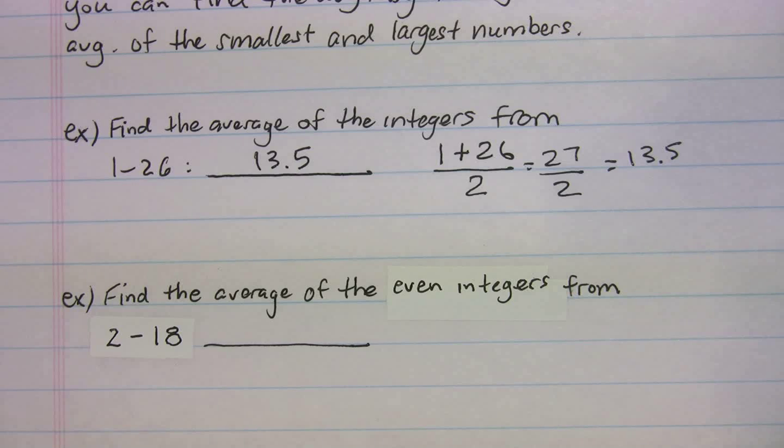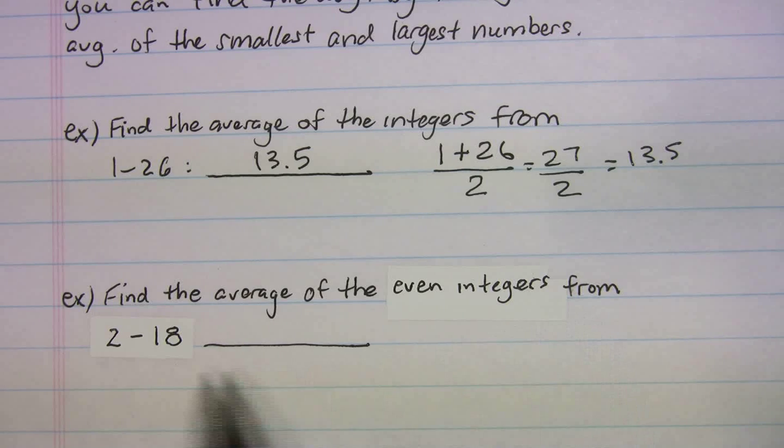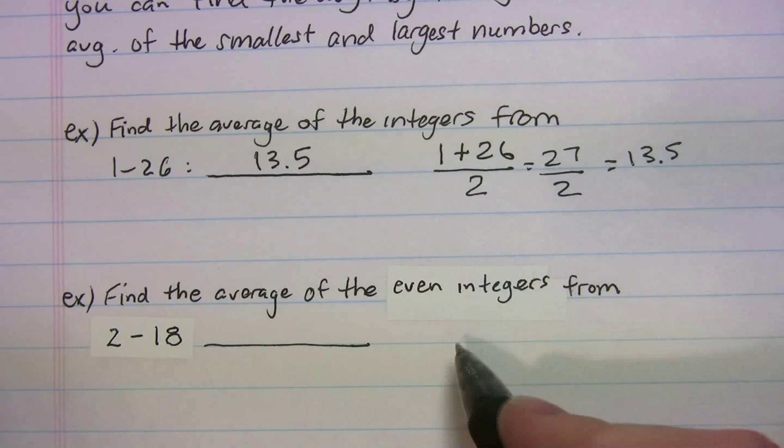You can even use that shortcut for when you're doing even numbers, if it's a set of even numbers or a set of odd numbers. The main thing, it has to be evenly spaced. So why don't you guys try this one? You can pause the video, see if you can figure this one out.